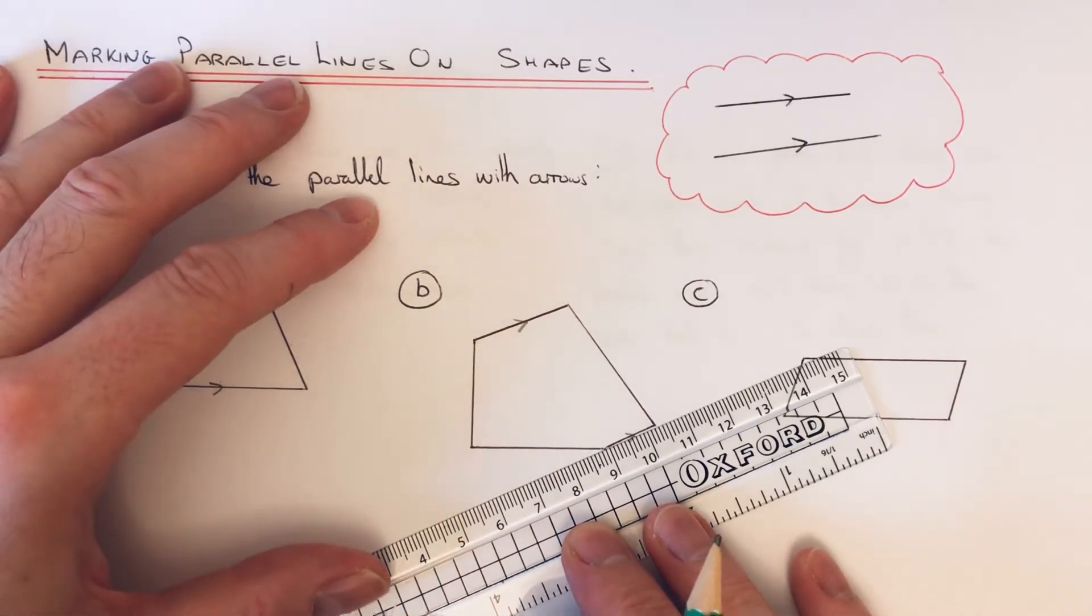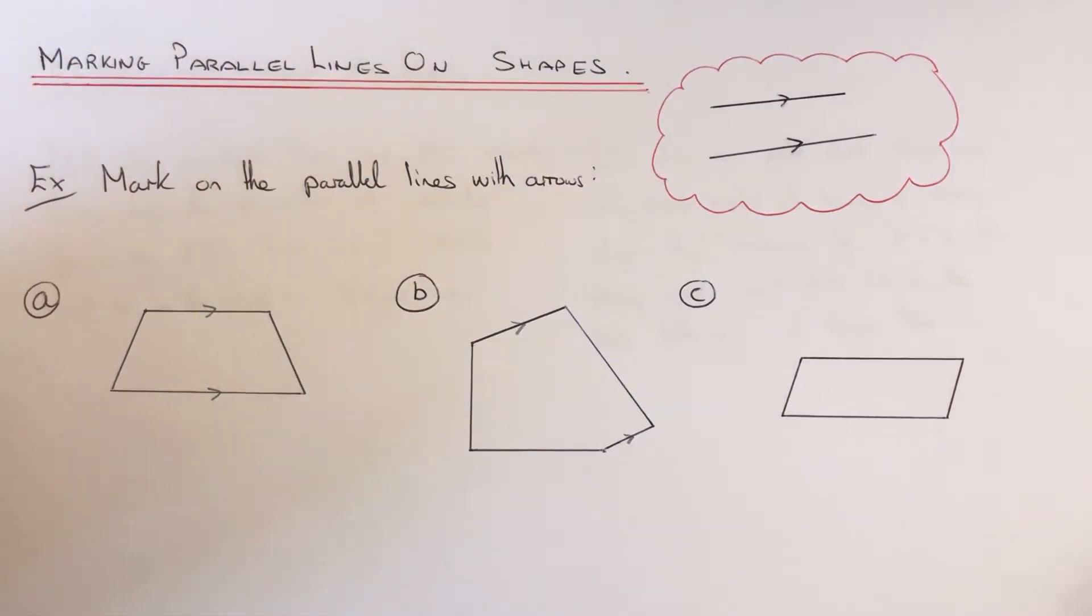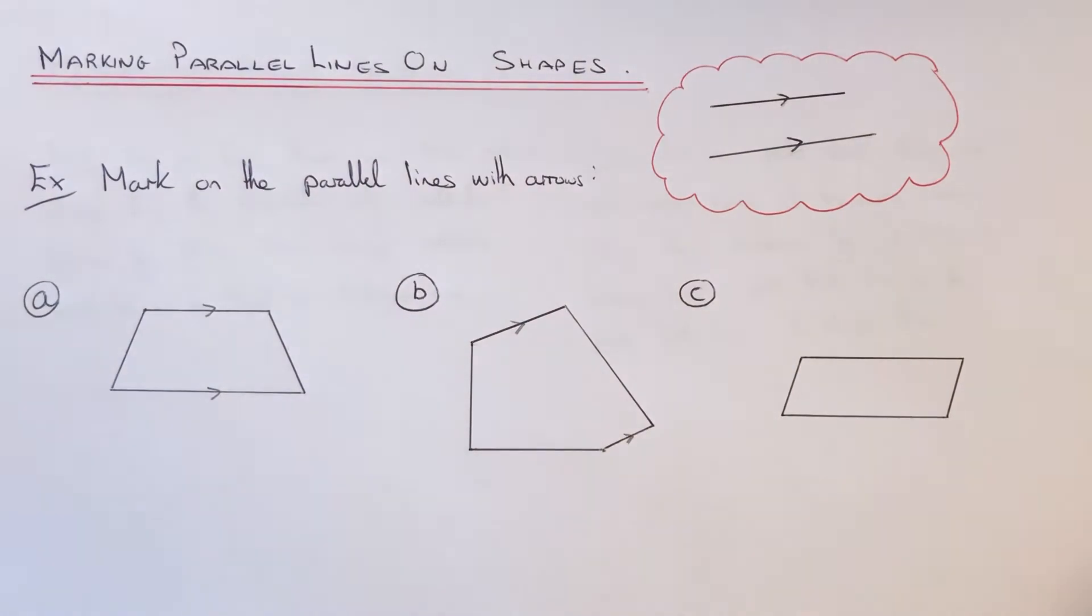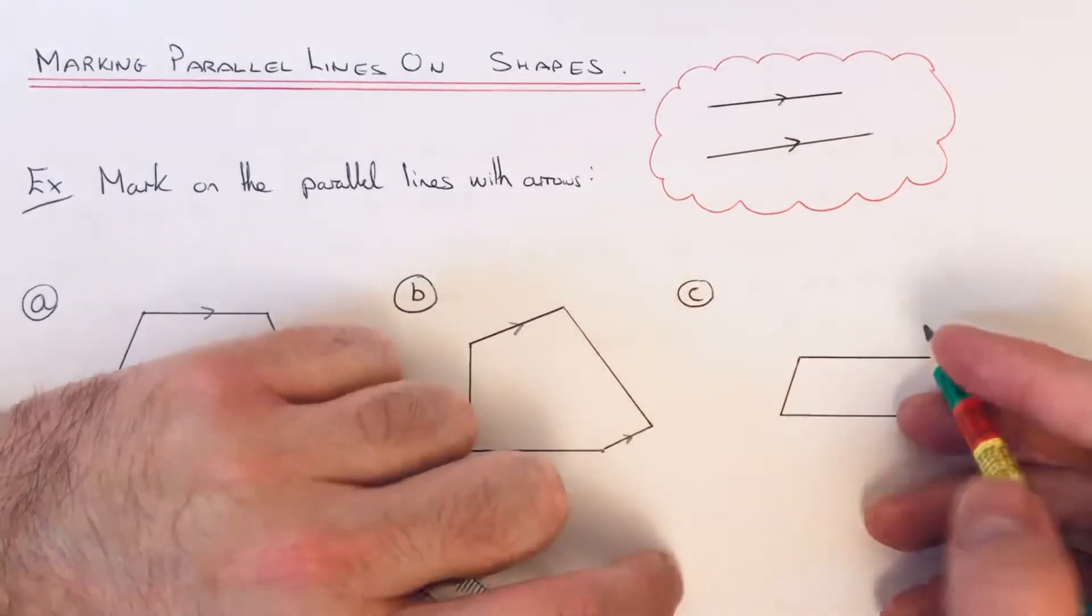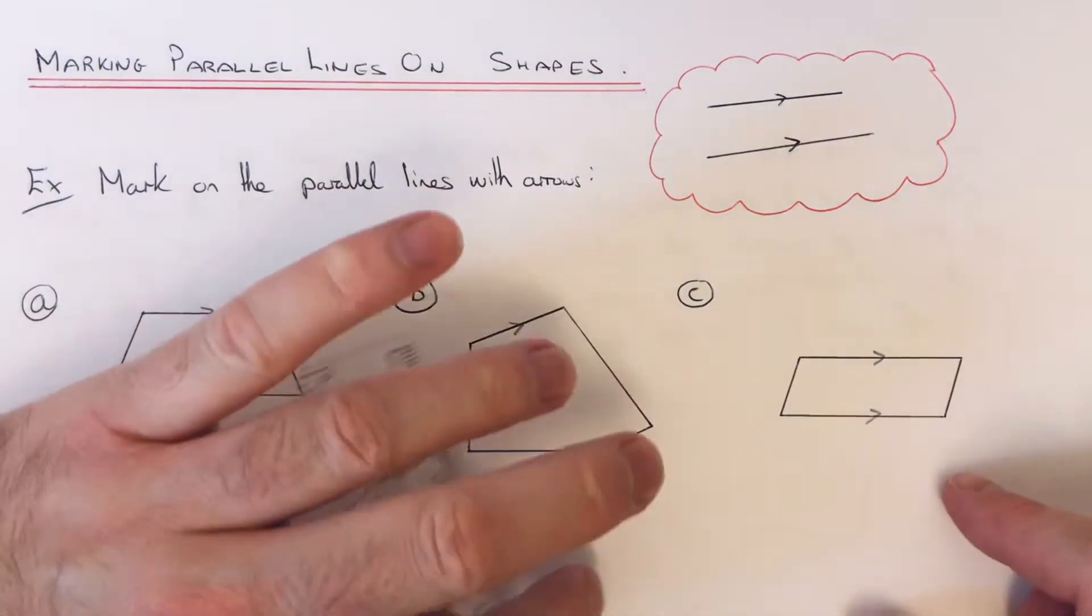Okay, let's have a look at the final example then. We've got part C. This time we have a parallelogram. So like the first one, you should be able to say that the top and bottom are parallel because of the two horizontal lines, so I can put a pair of arrows there.